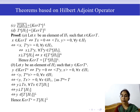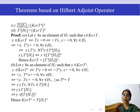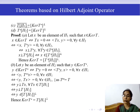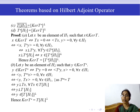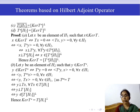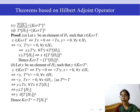For result B, we prove ker(T*) = (TH₁)⊥. Since T* maps H₂ to H₁, ker(T*) is a subset of H₂. Take Y in H₂ such that Y belongs to ker(T*). Y belongs to ker(T*) means T*Y = 0. Since T*Y is an element of H₁, its inner product with every element of H₁ is 0, so ⟨T*Y, x⟩ = 0 for every x in H₁.